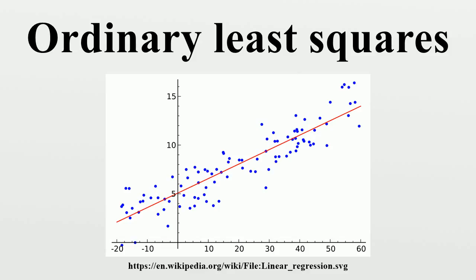When this assumption is violated the regressors are called linearly dependent or perfectly multicollinear. In such case the value of the regression coefficient beta cannot be learned. Although prediction of y values is still possible for new values of the regressors that lie in the same linearly dependent subspace.